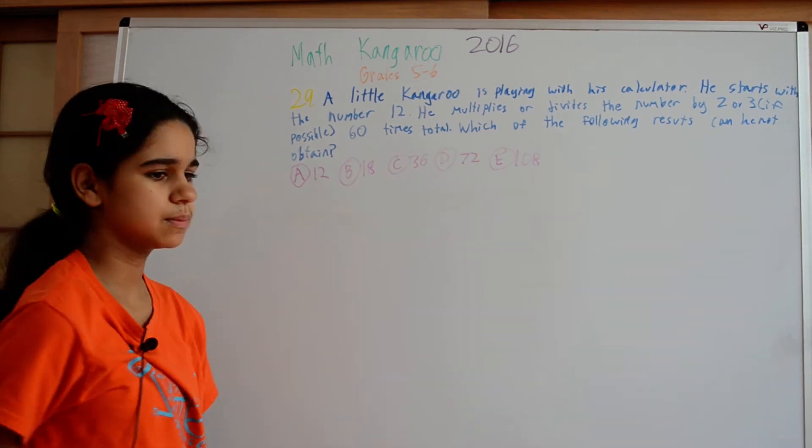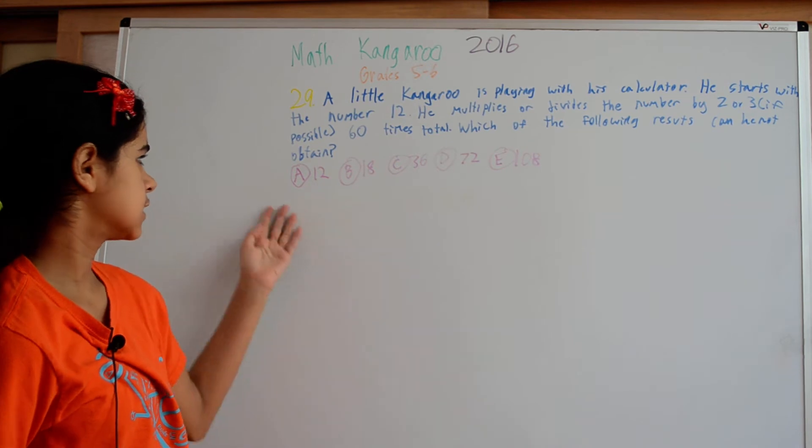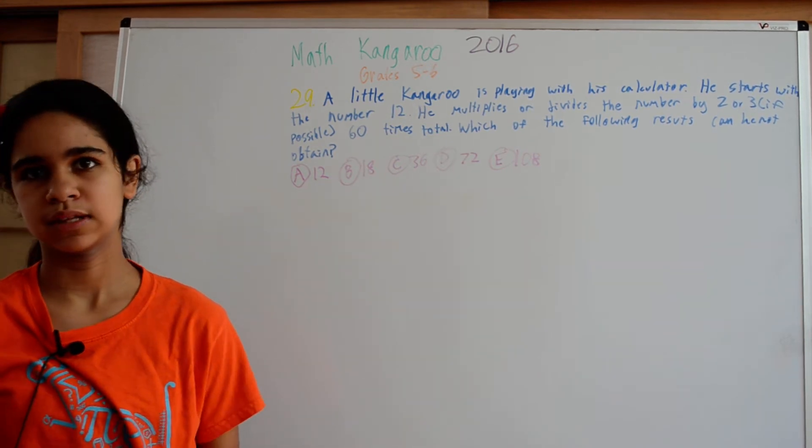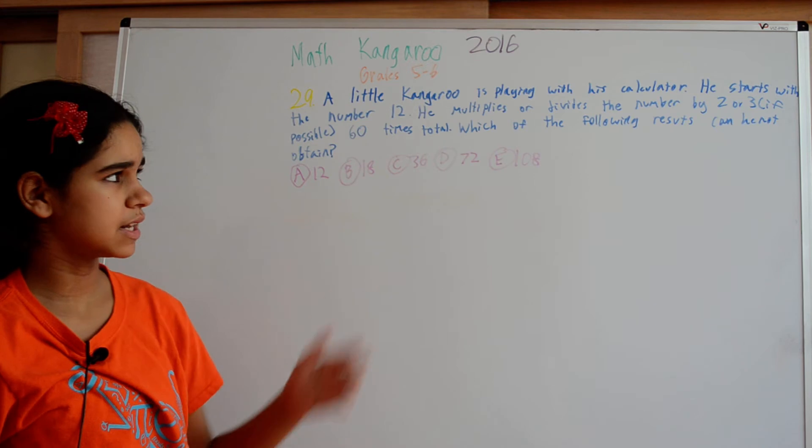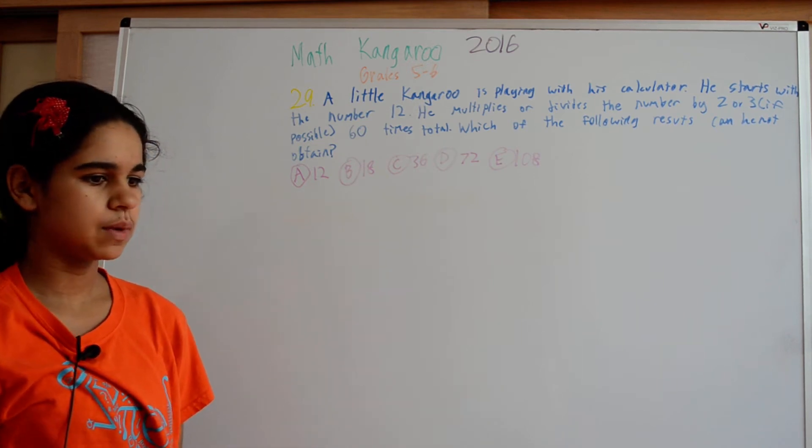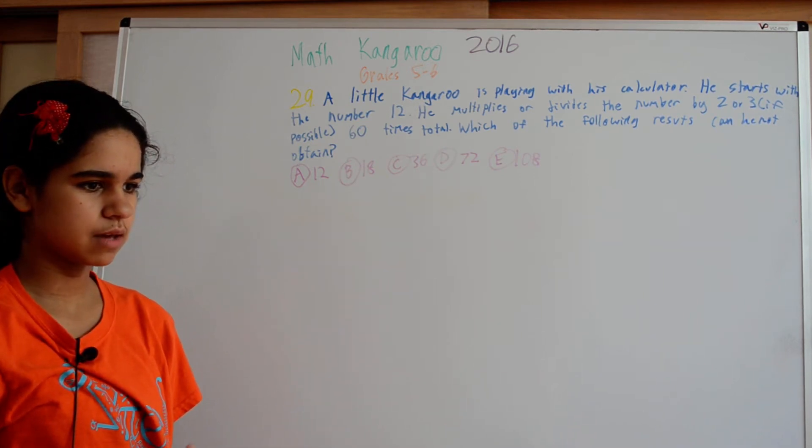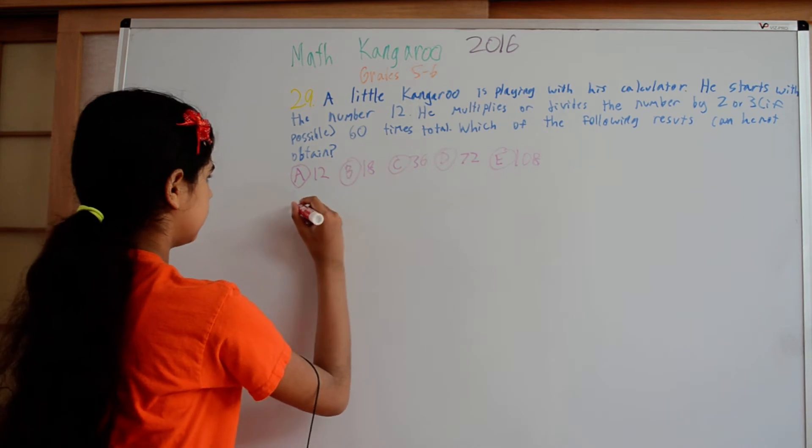And then we have the results. So we can start looking at them and trying to see if we can obtain them or not. So the first one is 12. 12 is the number we start with. And we have to do something to it 60 times, but we could do, for example,